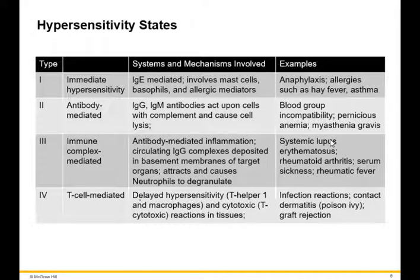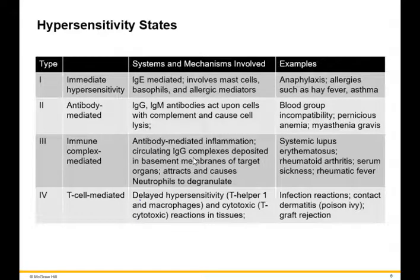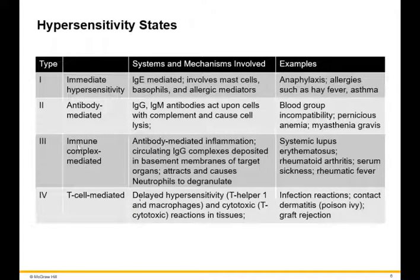Type 3 is immune complex-mediated. Antigen-antibody complexes with IgG deposit into tissues, attracting neutrophils and causing them to degranulate. Neutrophils, complement, and IgG antibody are all involved. Examples include systemic lupus and rheumatoid arthritis — both autoimmune diseases — as well as serum sickness and rheumatic fever. Wherever these immune complexes settle in tissues, the toxic chemicals released by degranulating neutrophils cause significant damage.